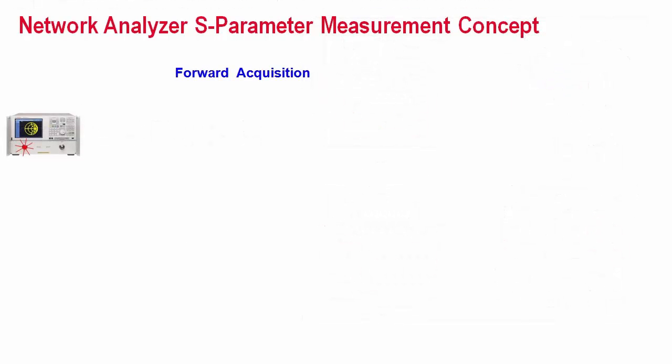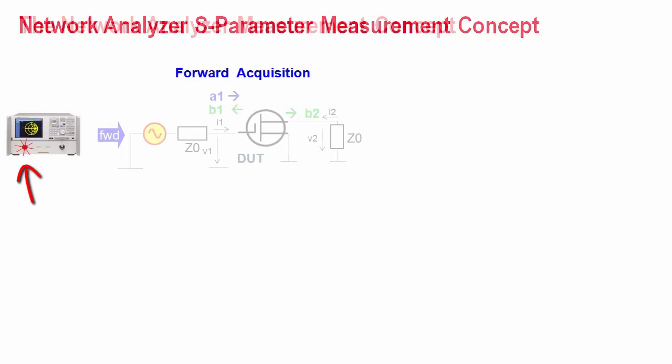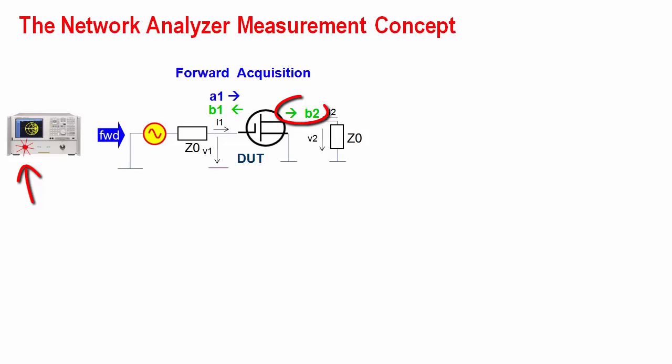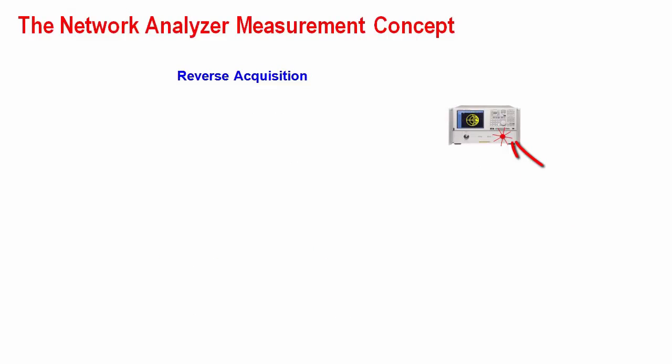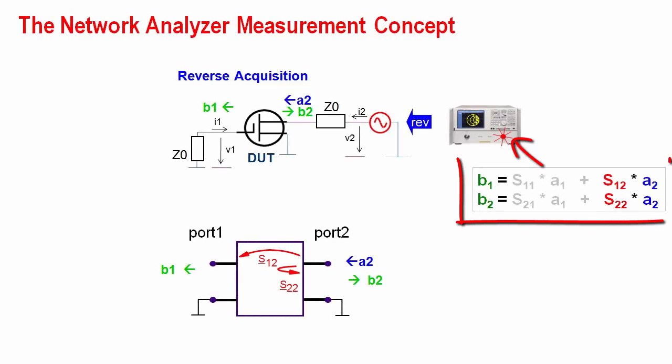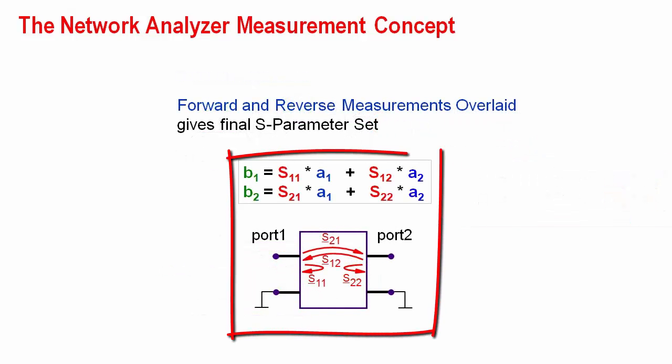S-parameter measurements begin with applying an RF test signal at port 1, the so-called forward data acquisition. The signal A1 is partly transmitted through the device under test and partly reflected, what is measured as signals B2 and B1. The S-parameter transmission factor S21 and the reflection coefficient S11 relate the two signals. Then the Network Analyzer flips the device stimulation to port 2 and applies the reverse data acquisition. The parameters S12 and S22 are obtained, making the set of four S-parameters complete.